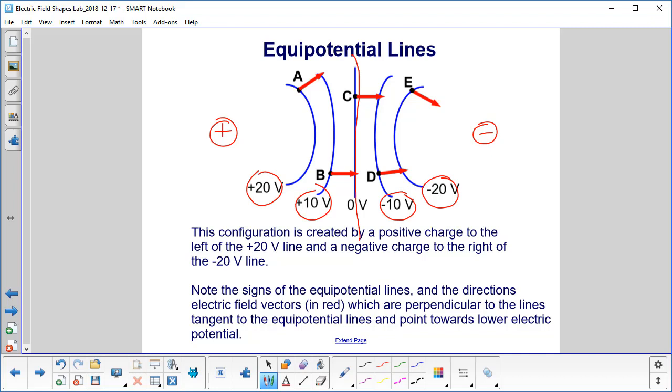Also, the direction of the electric field vectors, those are the red arrows there. They are always perpendicular to the lines that are tangent to the equipotential line and they point towards the lower electric potential. All the lines are pointing in that general direction towards this negative charge.